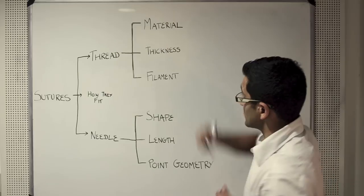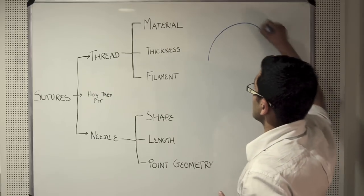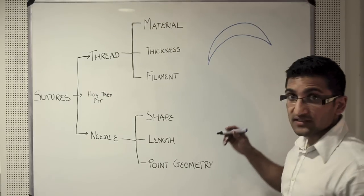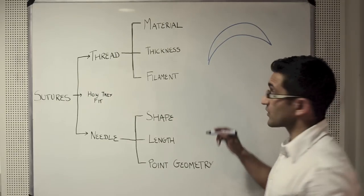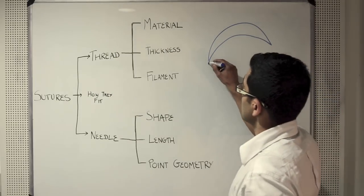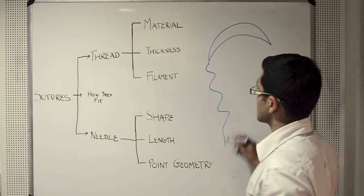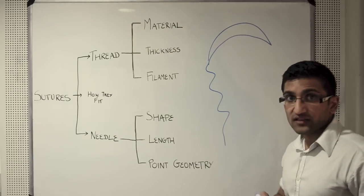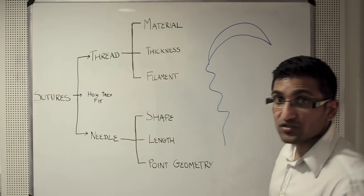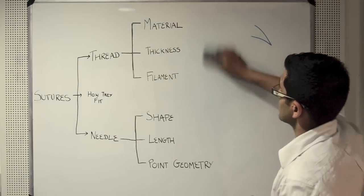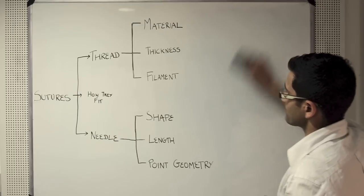Thinking about the suture itself, a suture consists of two different components: the needle as well as a thread. As long as you think about the suture this way, you won't go very far wrong, and that's how we'll structure the tutorial.